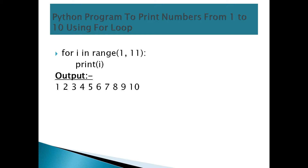Another for loop example: print numbers from 1 to 10 using a for loop. For i in range(1, 11): print i. This prints 1, 2, 3, 4, 5, 6, 7, 8, 9, 10. We use range(1, 11) because range goes up to but does not include the end value.